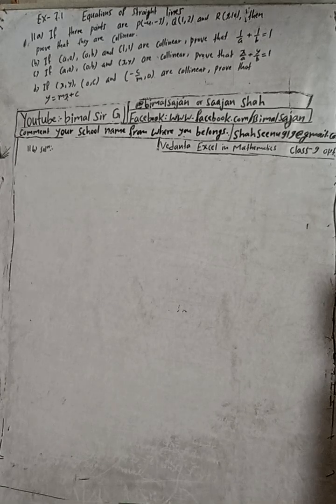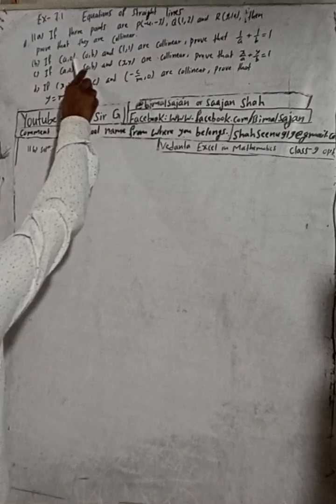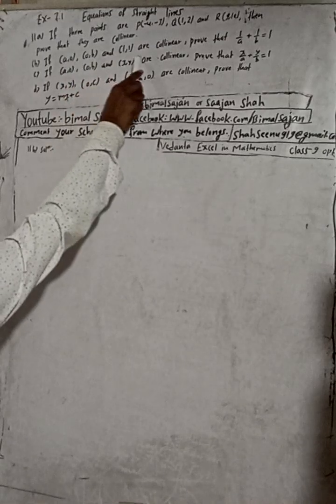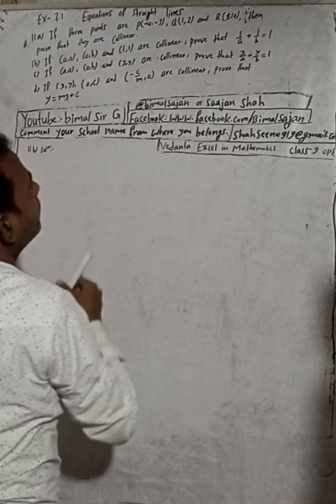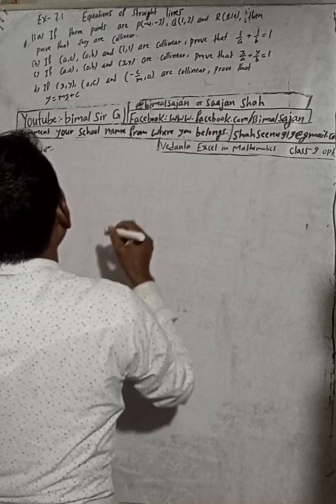Hi class 9 and 10 students, welcome back to Vimal Sharjee YouTube channel. This is question number 11b, exercise 7.1, equation of straight lines, class 9 mathematics. The question is: if A(a,0), B(0,b), and C(1,1) are collinear, prove that 1/a + 1/b = 1. We have to prove this.